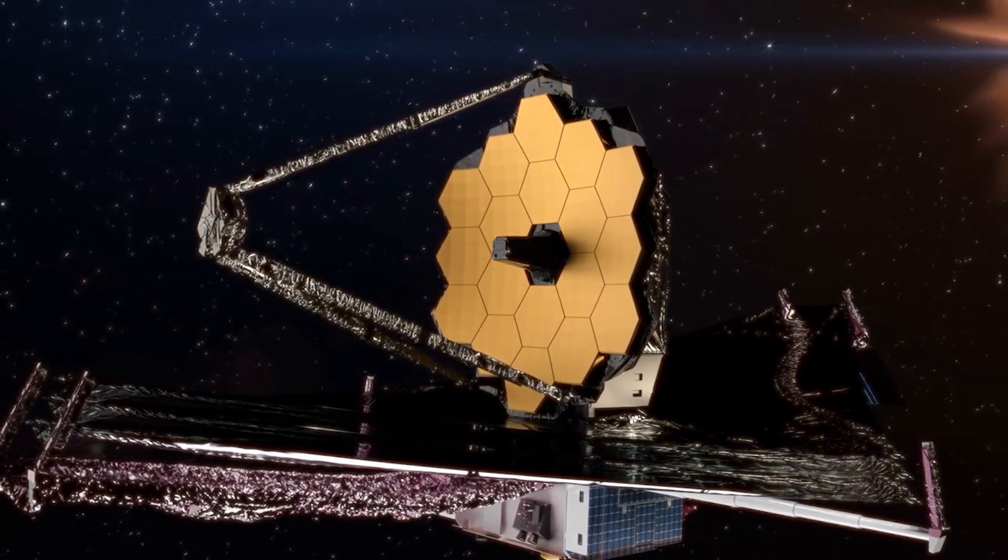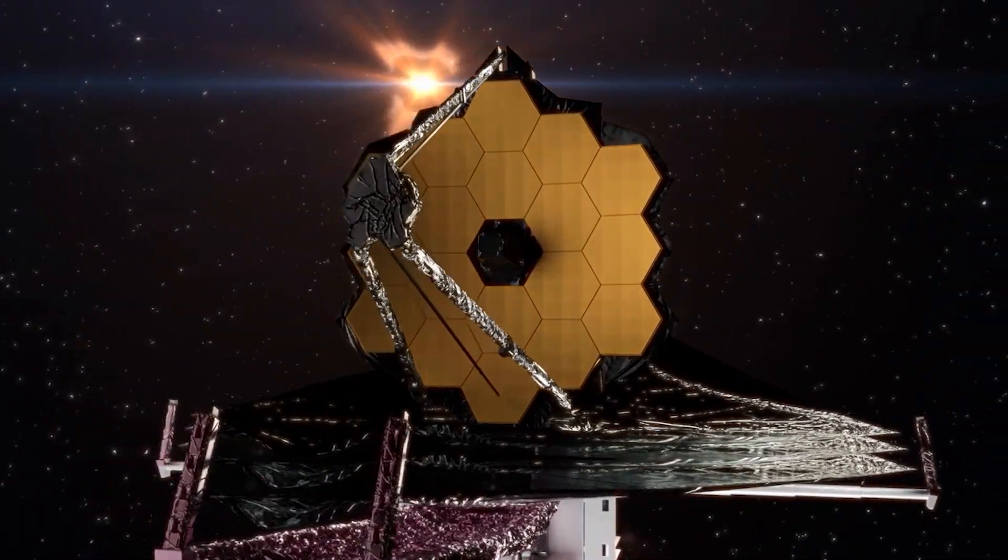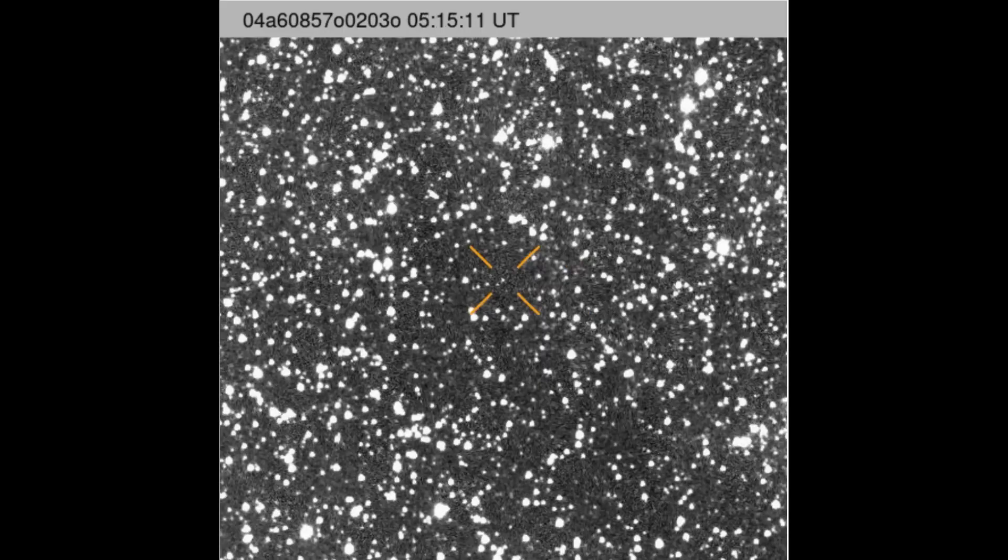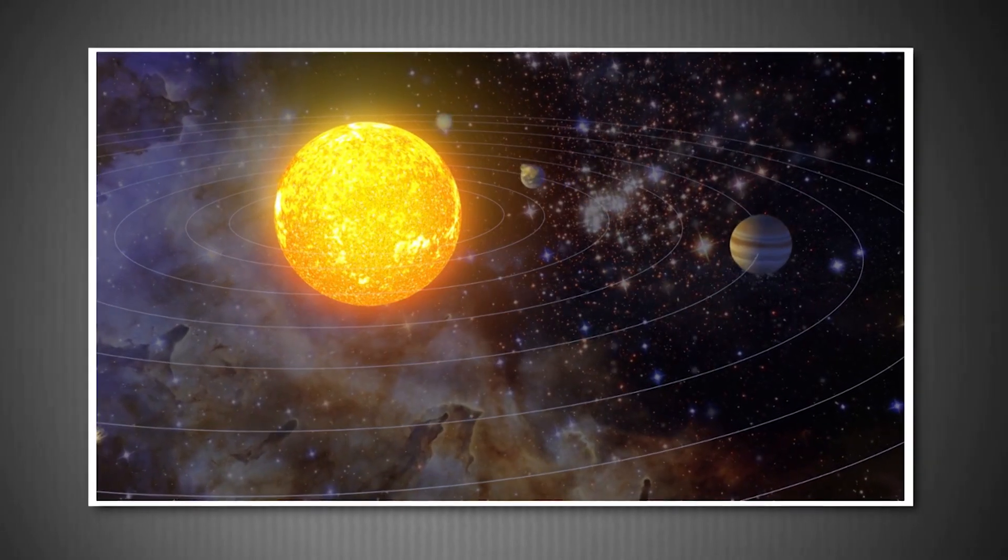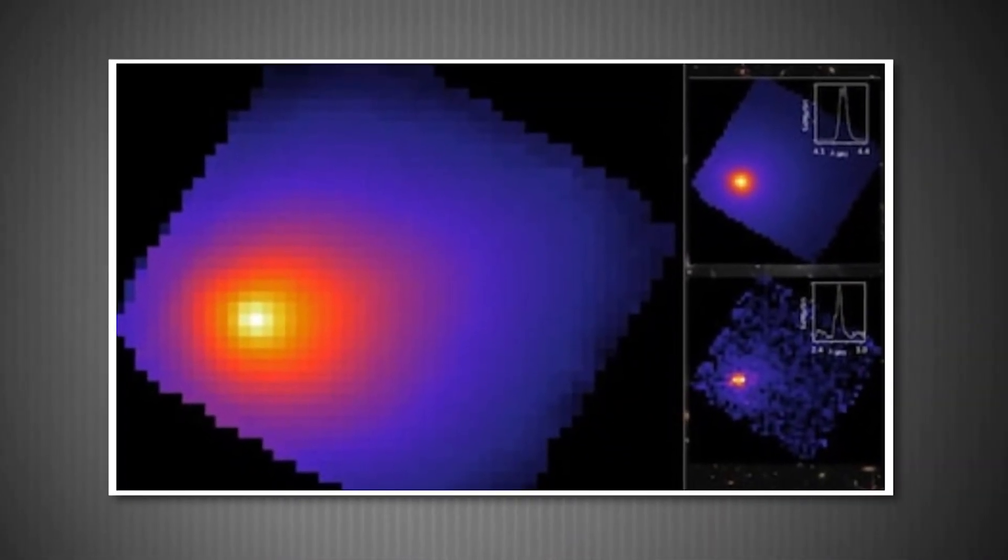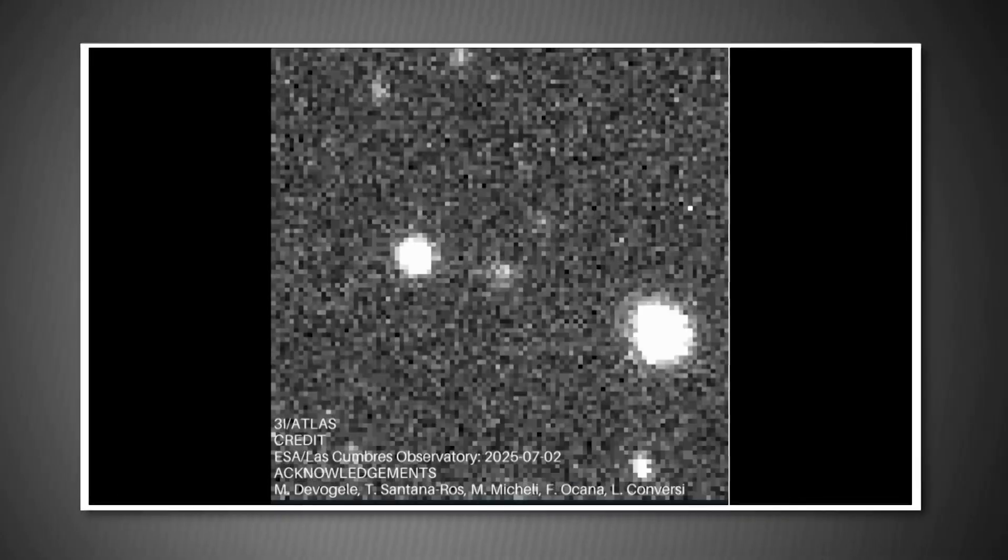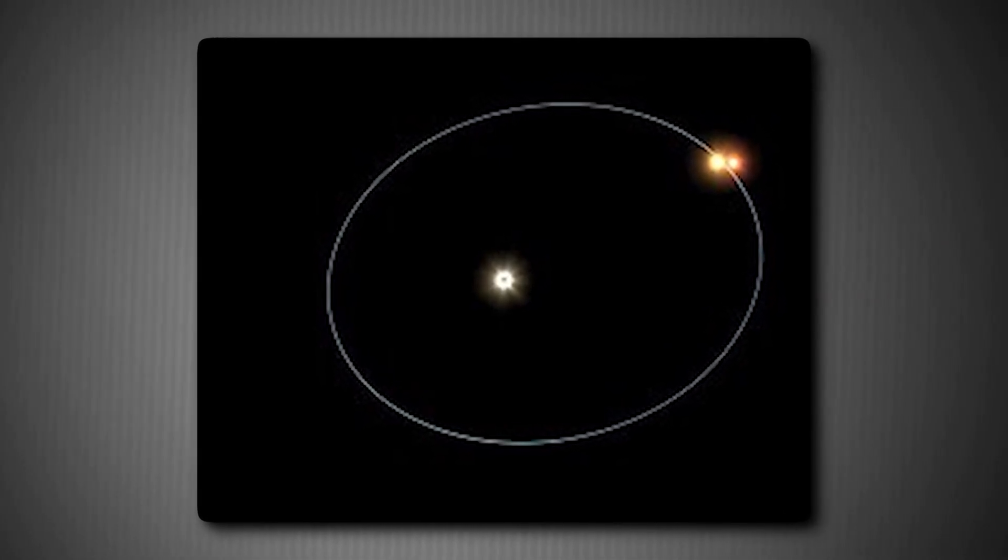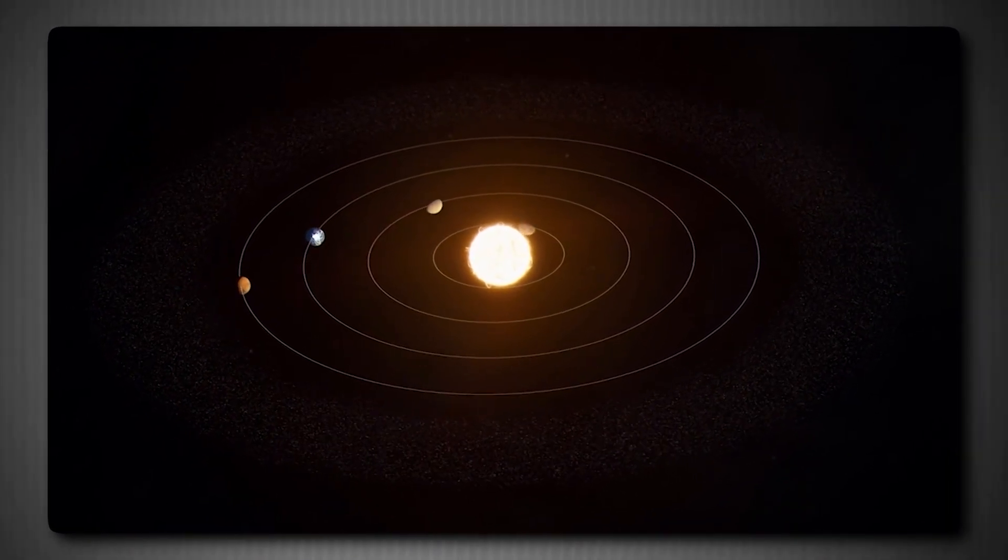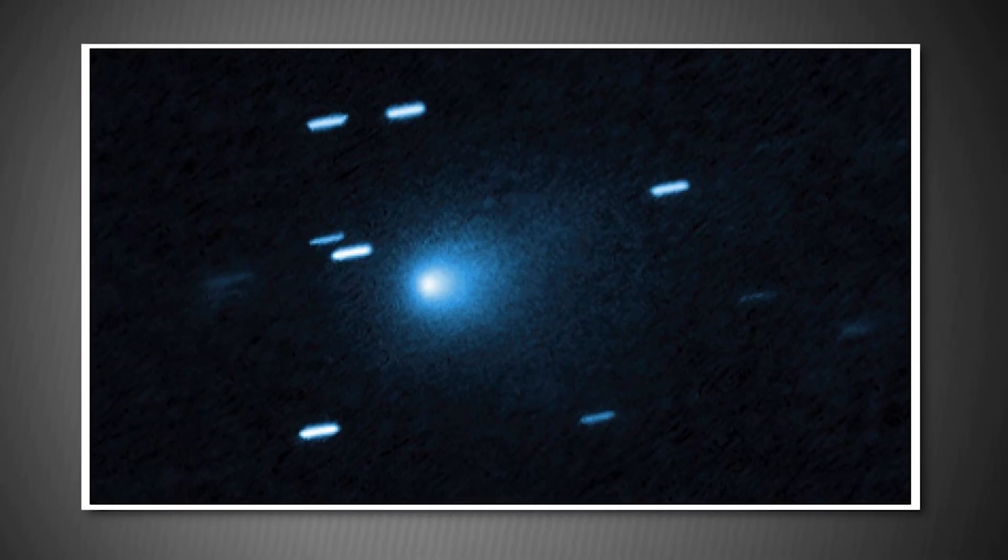Third, 3I ATLAS has some absolutely fascinating compositional quirks that are puzzling scientists. NASA's James Webb Space Telescope observed the comet on August 6th, and the results were surprising. The telescope's near-infrared spectrograph revealed that 3I ATLAS is wrapped in carbon dioxide fog, and it's unusually rich in carbon dioxide compared to typical comets. Here's why that's weird. Most comets in our solar system are primarily composed of water ice, with carbon dioxide as a secondary component. But 3I ATLAS appears to be dominated by carbon dioxide ice, what we commonly call dry ice.